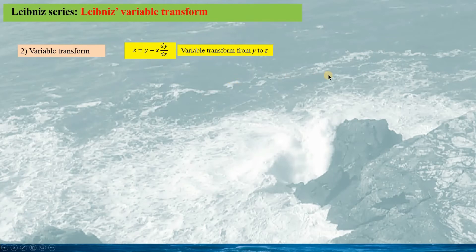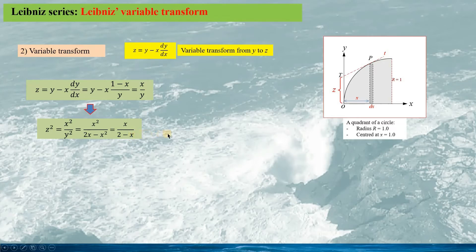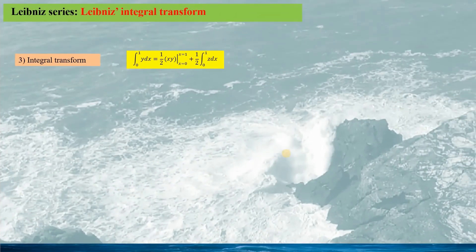Now, based on the Leibniz transmutation theorem, we can calculate the new variable z by the variable transform. Substituting the derivative of y with regard to x, we obtain the relation, and if we square z, we get a further relation, thus we can also obtain x as a function of z given as a simple expression. We can see that when x equals 0, z is 0, and when x equals 1, z equals 1.